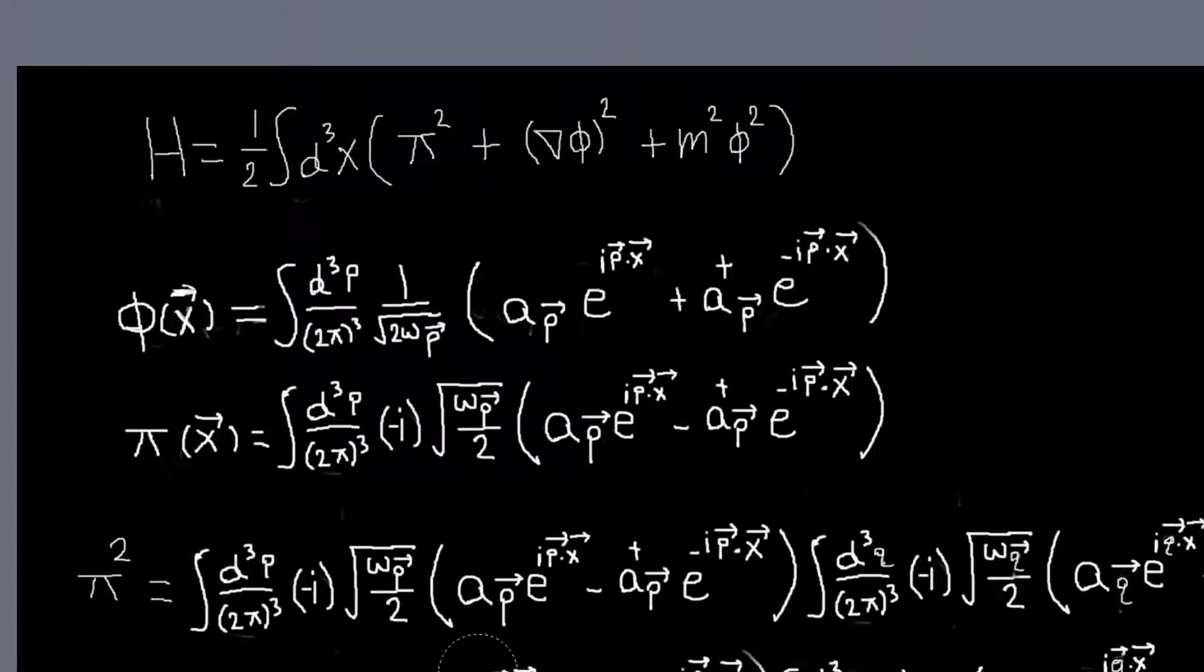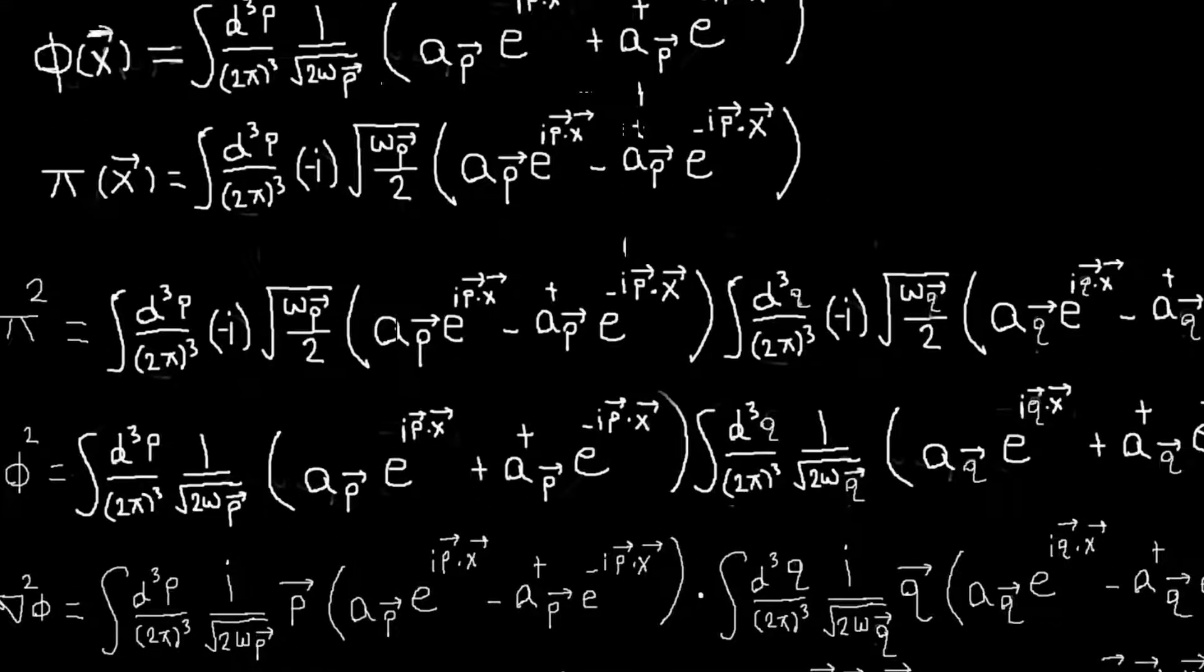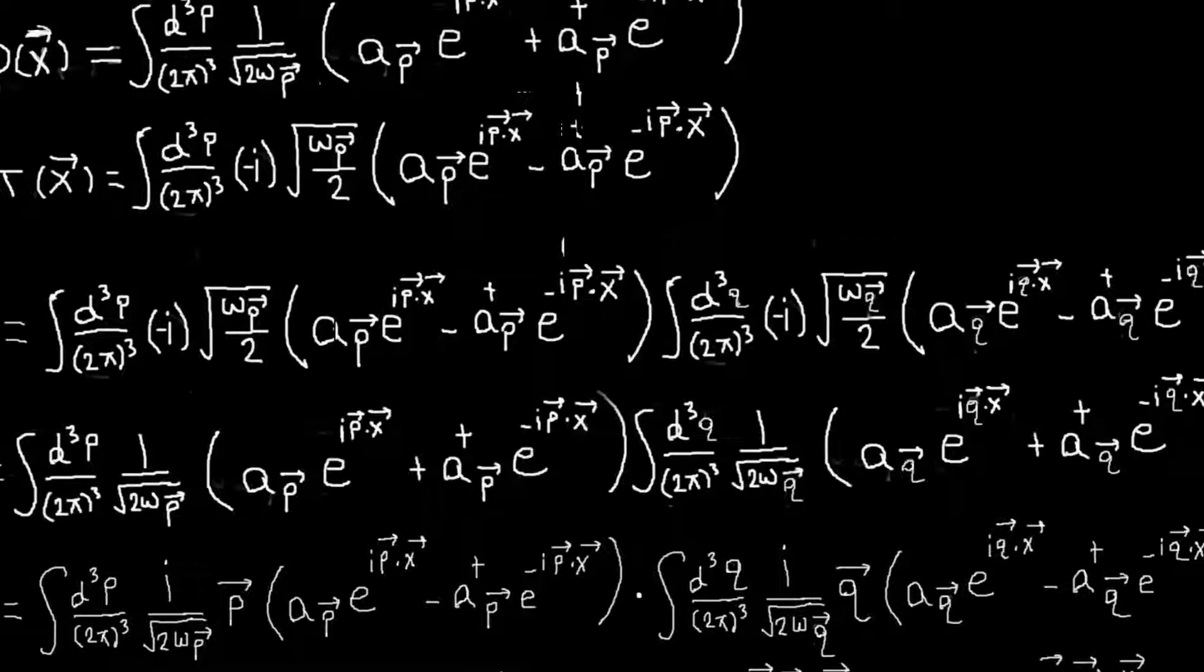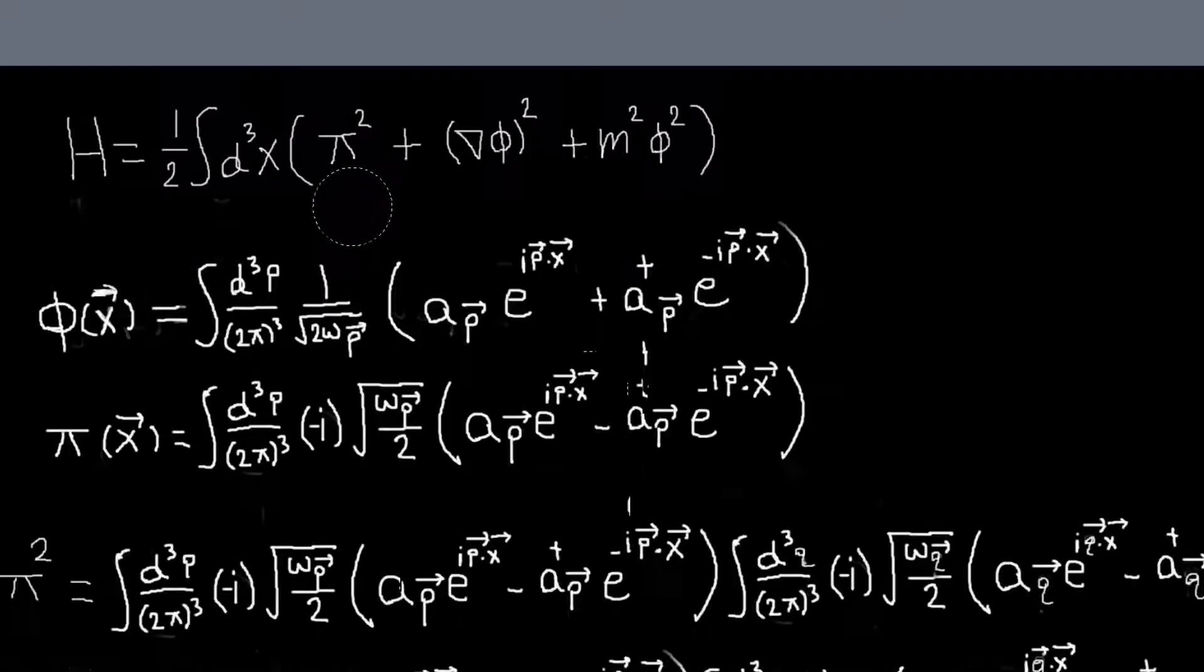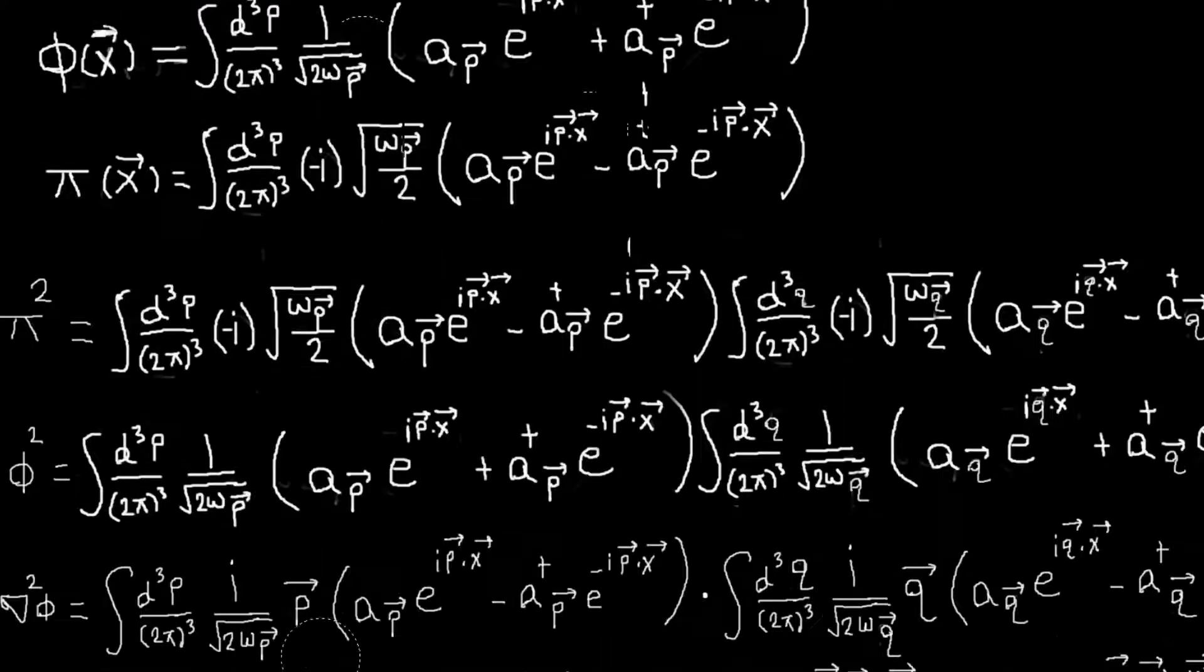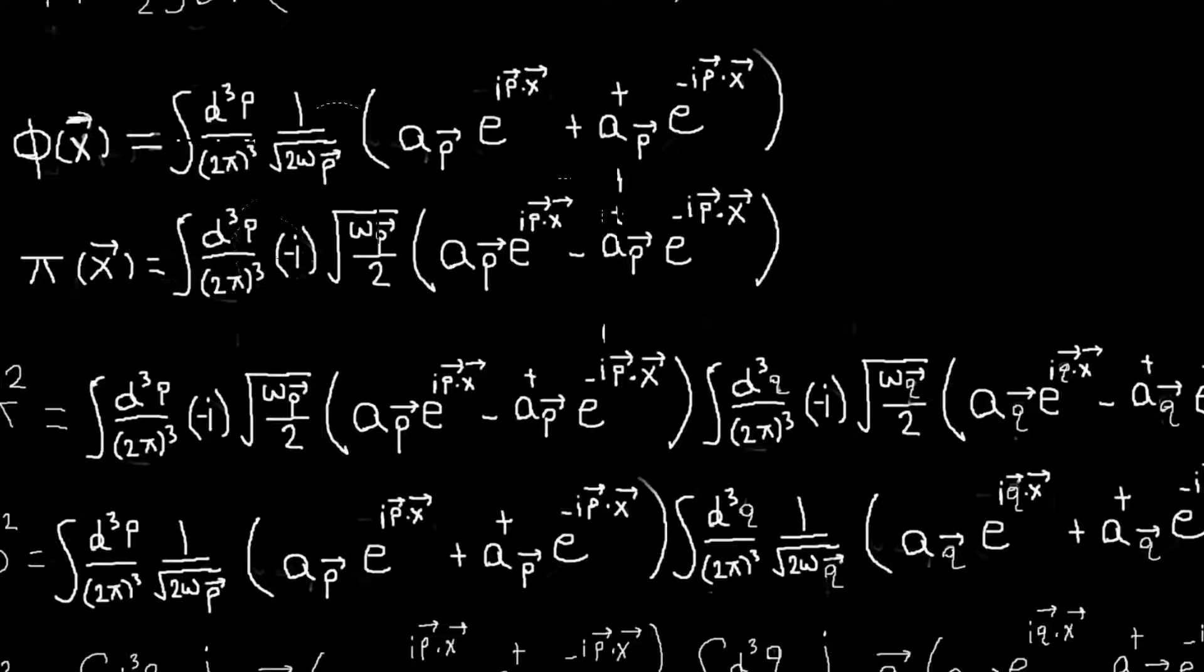So to do that, I just write out what each of these three things are. So again, just note that when you have squared like this and we're multiplying two things, they're fine to have integrals in them. These integral variables are dummy variables.